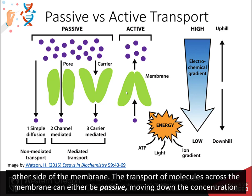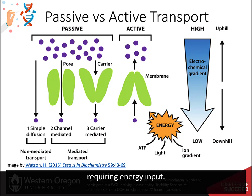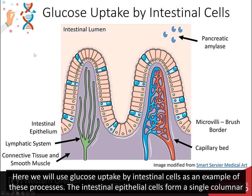The transport of molecules across the membrane can either be passive, moving down the concentration gradient and not requiring energy input, or it can be active, moving the substance against its concentration gradient and requiring energy input. Here we will use glucose uptake by intestinal cells as an example of these processes.